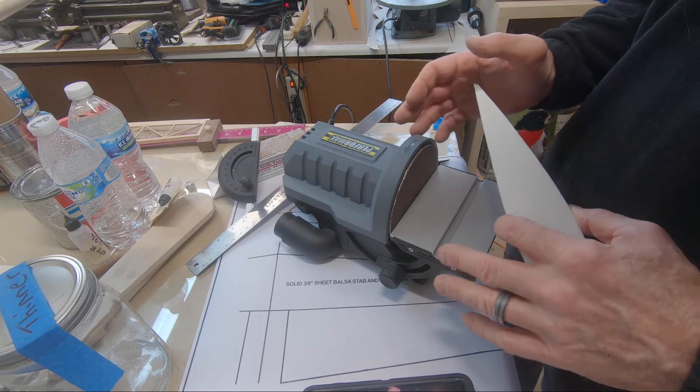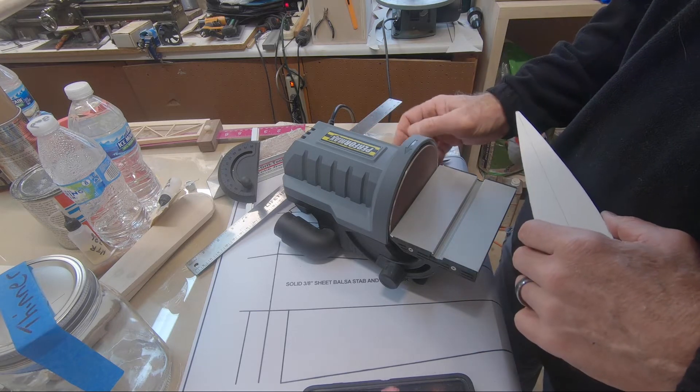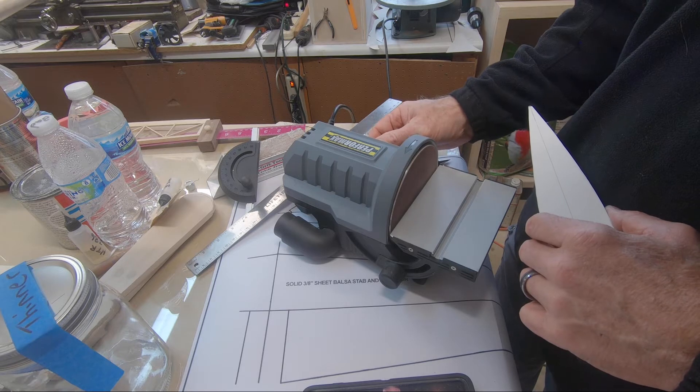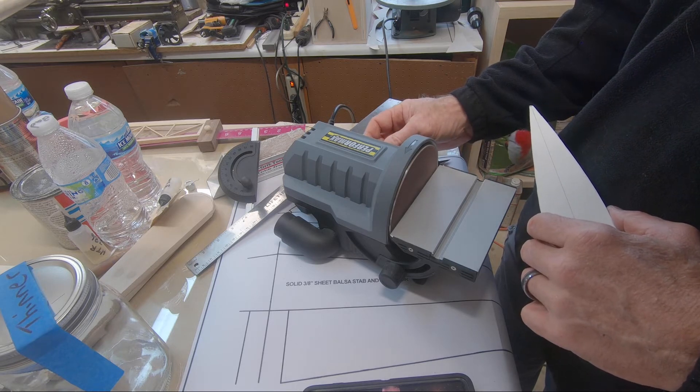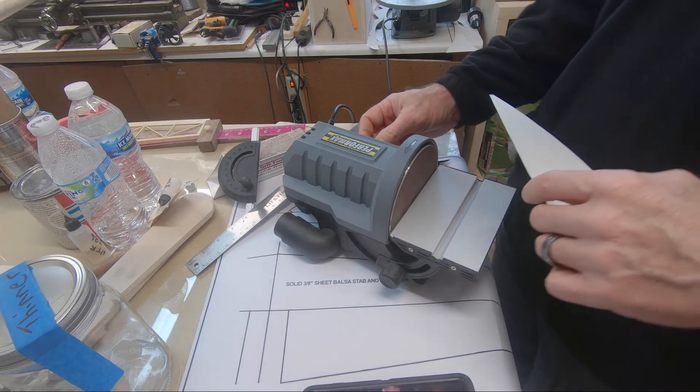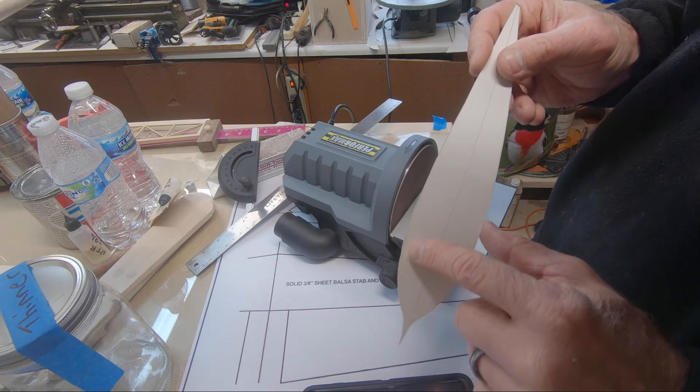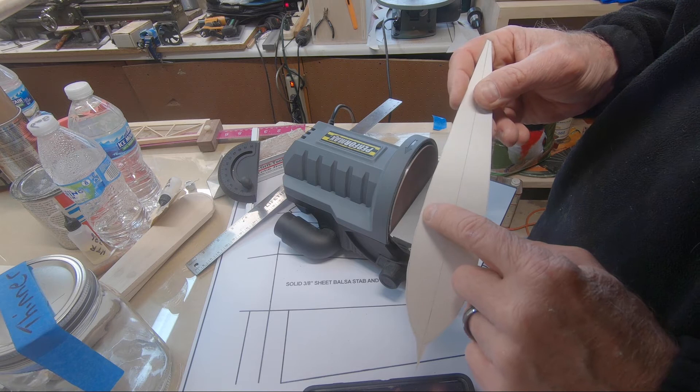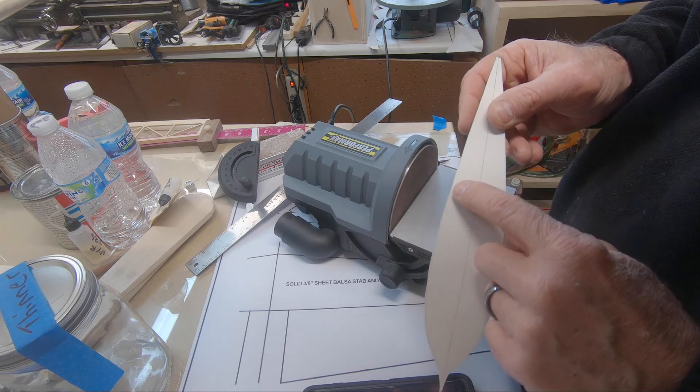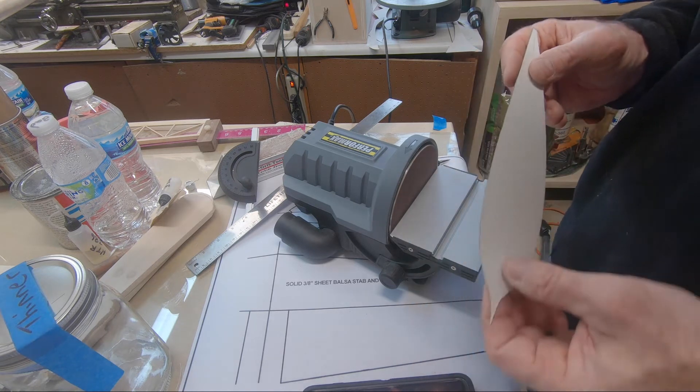And the neat thing about it, it's got a variable speed. So I've sanded pretty close to this line. You can get right next to it, but don't get on it. You want to be able to sand it.